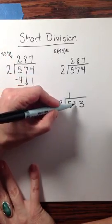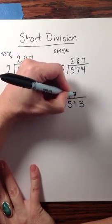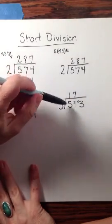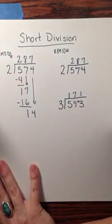3 fits into 21 seven times, with 0 remaining. And 3 fits into 3 one time.